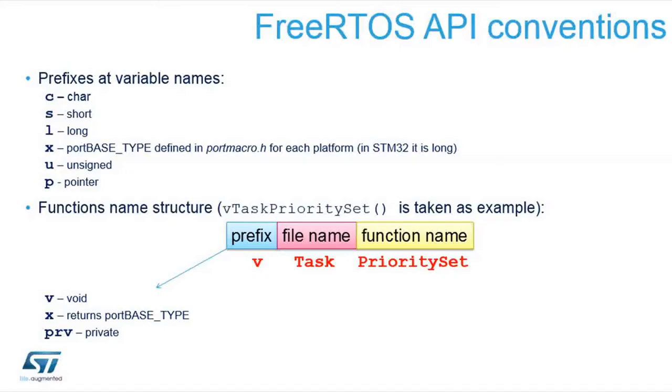The native API has got some conventions like for variable names. It has got a prefix that shows what type of the variable it is — whether its type is character, short, long, pointer, unsigned, or a specific return type.